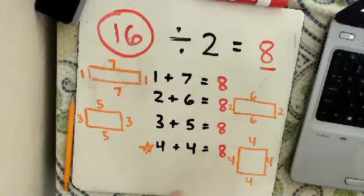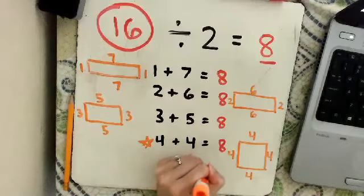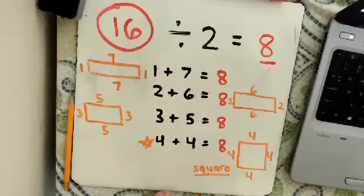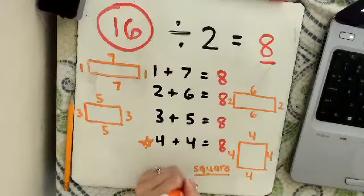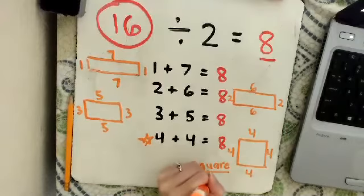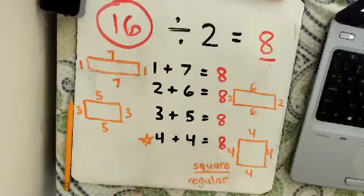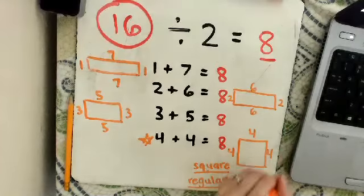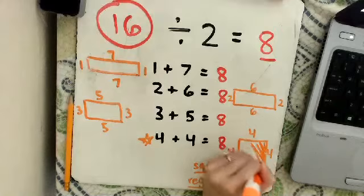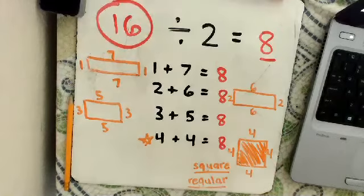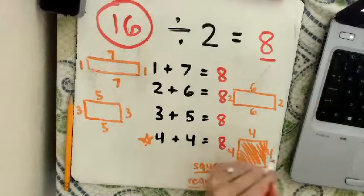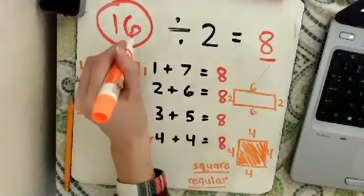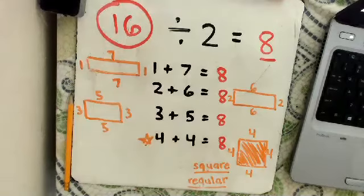If you said that this rectangle is a square, you are correct. All four sides are the same length. If you also said that it's a regular polygon, that's correct too. Regular is when all the sides are the same. So this rectangle is special because it's also a square and it's regular. So 4 plus 4 plus 4 plus 4, or 4 times 4, gives us a perimeter of 16.